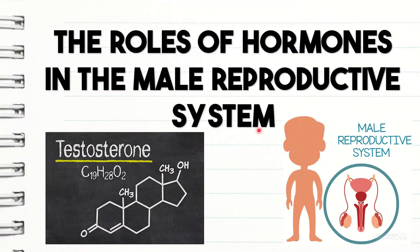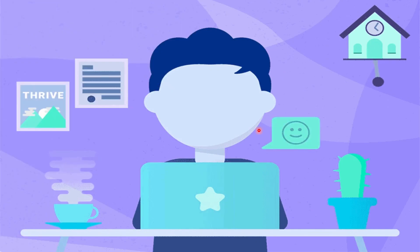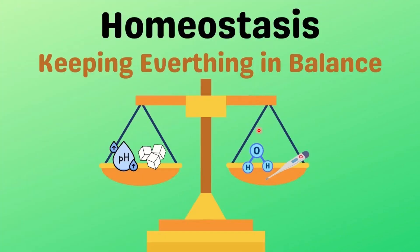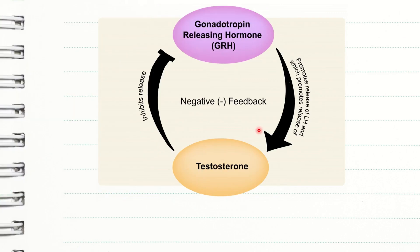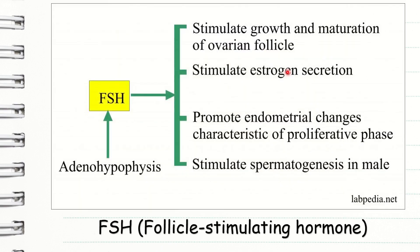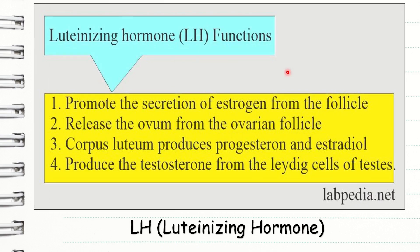Now let us proceed to the roles of hormones in the male reproductive system. Hormones in both males and females are controlled by feedback mechanisms. Feedback mechanisms, or feedback loops, enable the body to maintain homeostasis, or a normal steady state. These bring the body toward or away from homeostasis. In males, a negative feedback system, which causes a decrease in function, controls sperm production. This means that negative feedback inhibits the release of GRH or gonadotropin-releasing hormone, as well as FSH or follicle-stimulating hormone, and LH or luteinizing hormone.